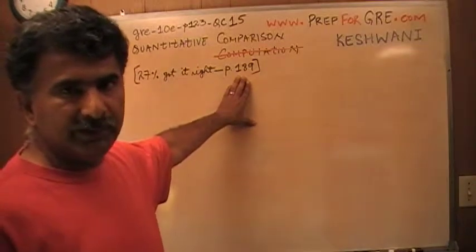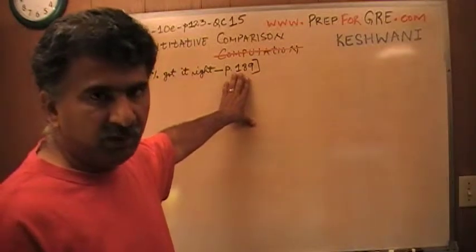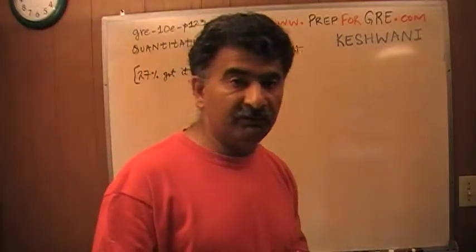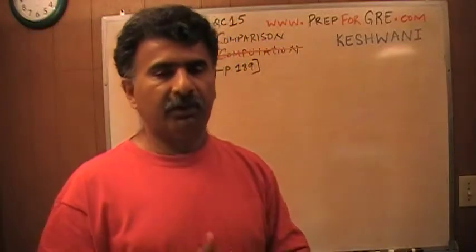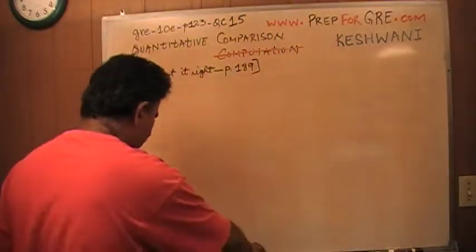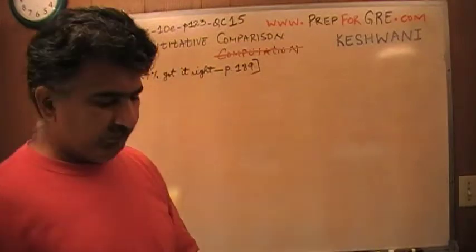You're going to find this information on page number 189, which is where you're going to find the answers, and next to the answers it tells you what percentage of people who took this particular exam got this particular question correctly. So this is a hard question. About three quarters of the people are missing it.